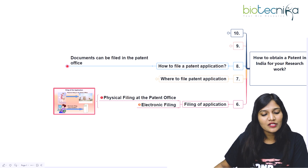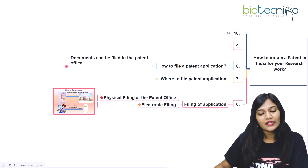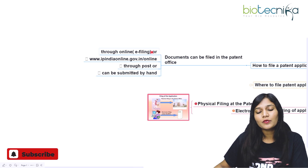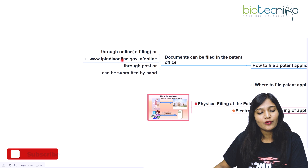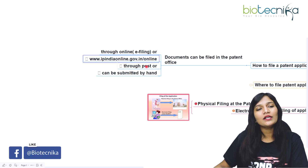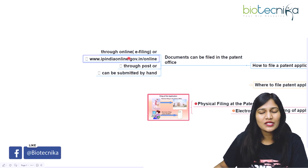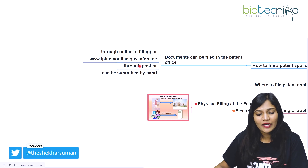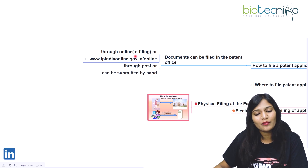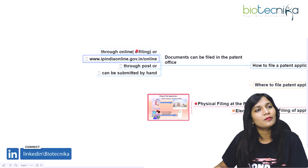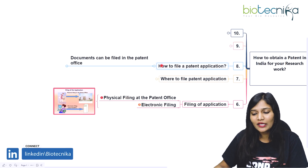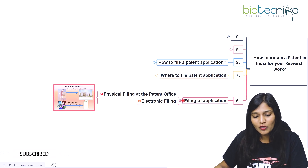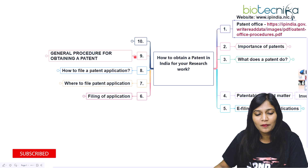Documents can be filed at the patent office. If you go to the office to apply, they will help fill up your forms. You can also visit the website or, in older practice, send by post. Nowadays we go in for the e-filing process only, or you can go directly to the office and apply through online mode as well.